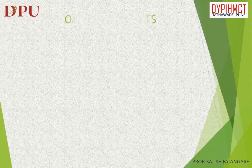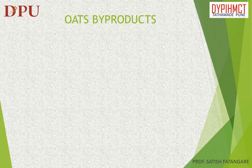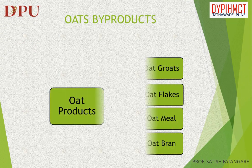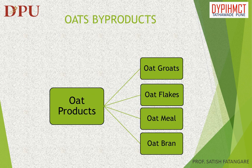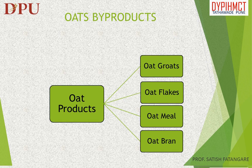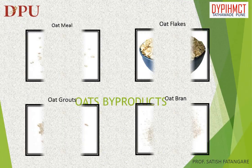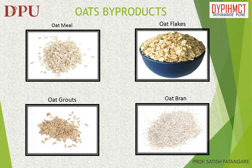In this slide we will talk about the by-products of oats. The by-products of oats are oat groats, oat flakes, oat meal, and oat bran.